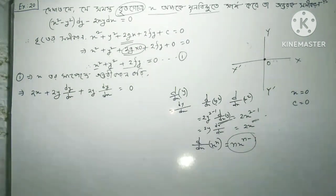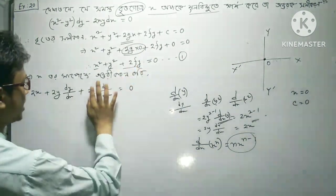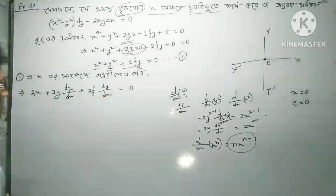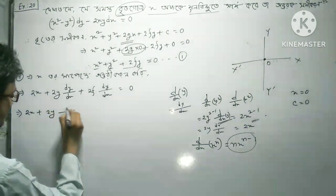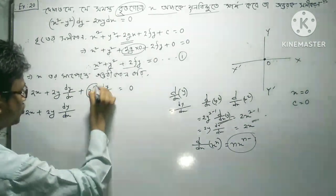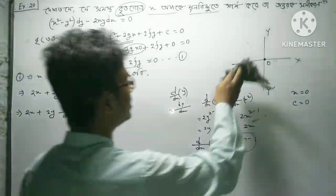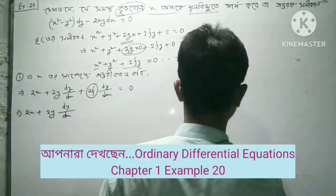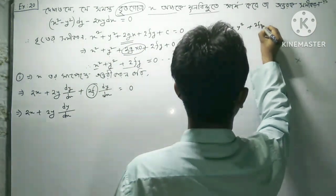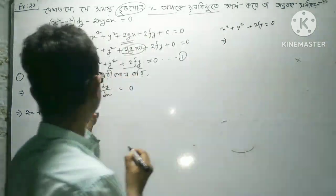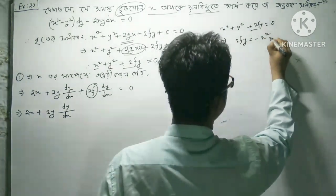So we can factor 2x. Taking the derivative dy/dx, we get x² + y² + 2xy. This equals zero. From this we can see that 2xy terms will be minus. So we have x² + y² = -2xy.